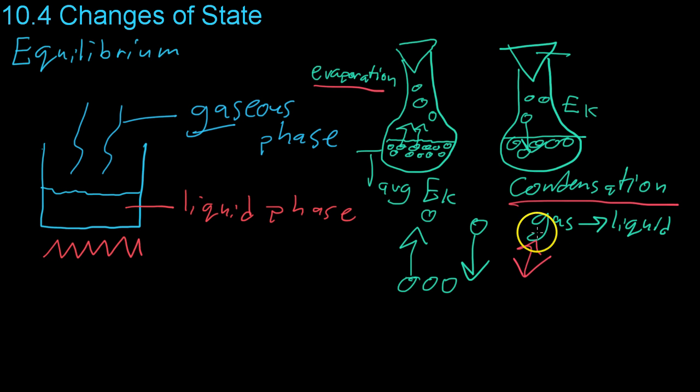Throughout this whole process, there are atoms that are both leaving the liquid to become a gas, as well as gases that are using their kinetic energy to come down and join a liquid. So these two processes of evaporation and condensation are in constant flux.